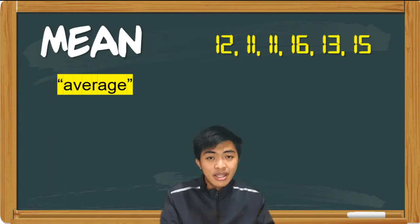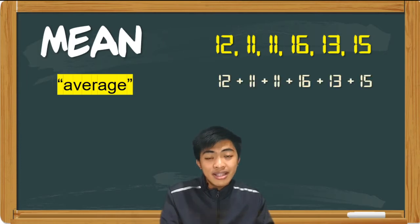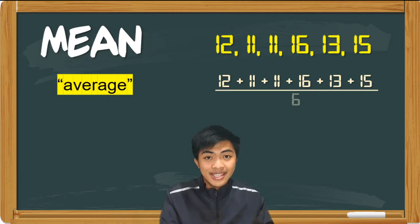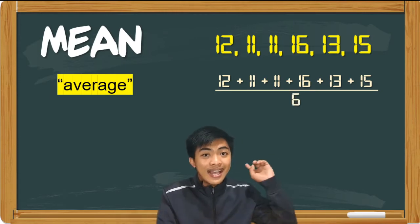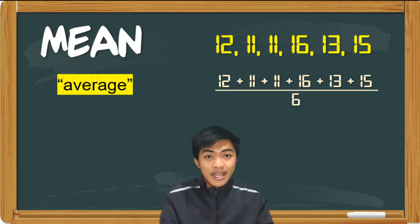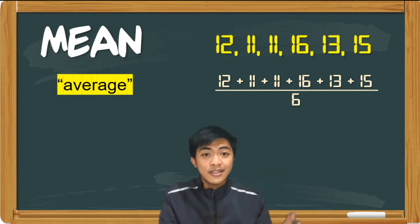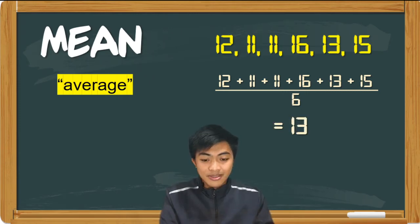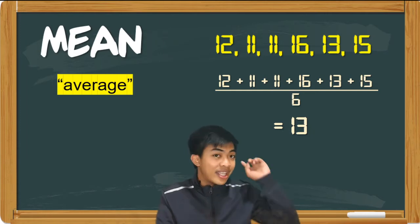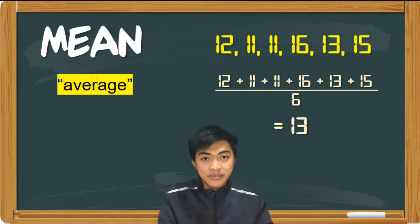Para makuha natin yung mean, pag-addin lang natin lahat ng mga values na yan, divided by 6. Bakit 6? Kasi may 6 na values dyan sa ating dataset. So pag-addin, divided by the number of values, and doing that, we will be having an answer of 13. So yung mean or average ng dataset na yan ay 13.